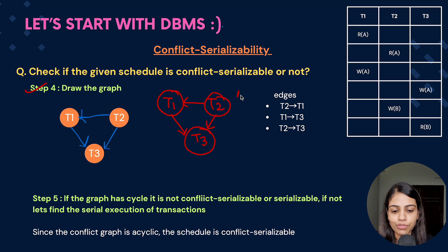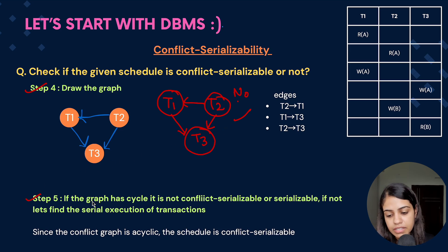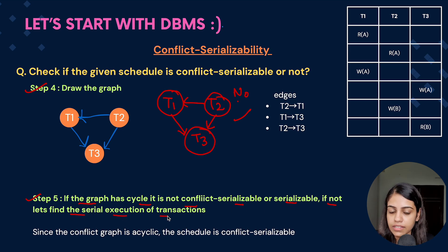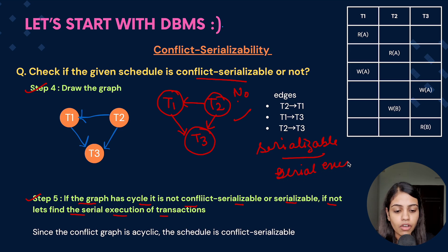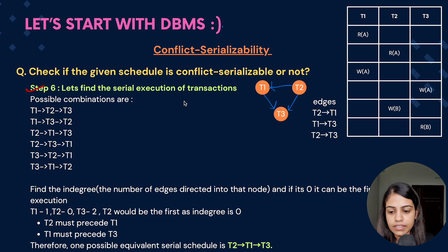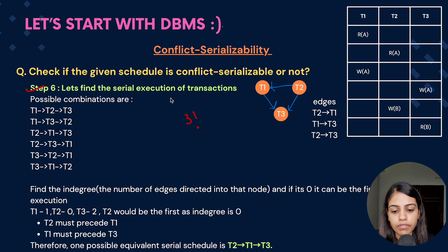Since the graph has no cycles, this particular schedule is conflict serializable. If the graph had a cycle it would not be conflict serializable. Since it is conflict serializable it is also serializable, so we can find the equivalent serial execution. Step 5: find the serial execution of transactions.